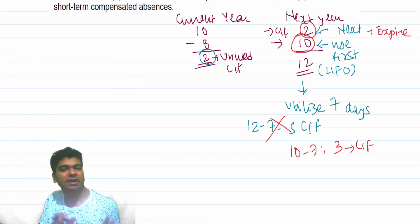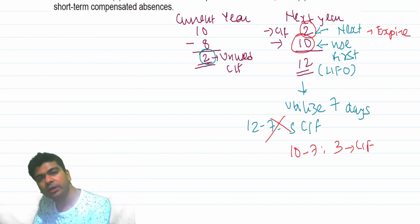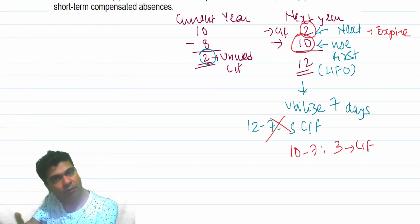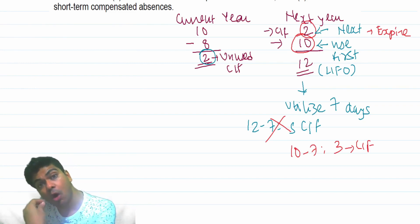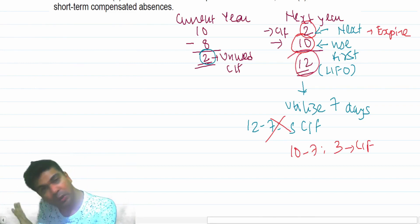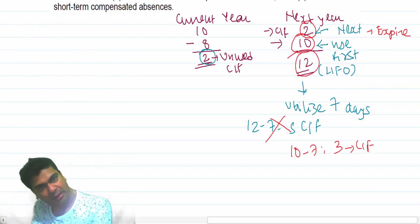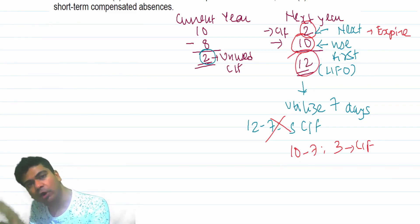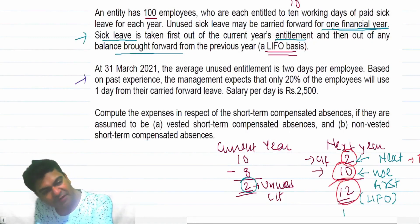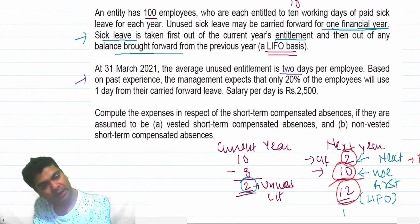Then those 3 days can be carried forward for the next year, and that's how the cycle will keep on moving. Next year again you will get 3 days carried forward plus 10 days of that year, so you have 13. If you want to enjoy the full benefit of what you have carried forward, you have to utilize all 13 days — or in the previous scenario, all 12 days. Only then can you enjoy the benefit of what you have carried forward. They are saying that at 31st March 2021 the average unused entitlement is 2 days per employee.